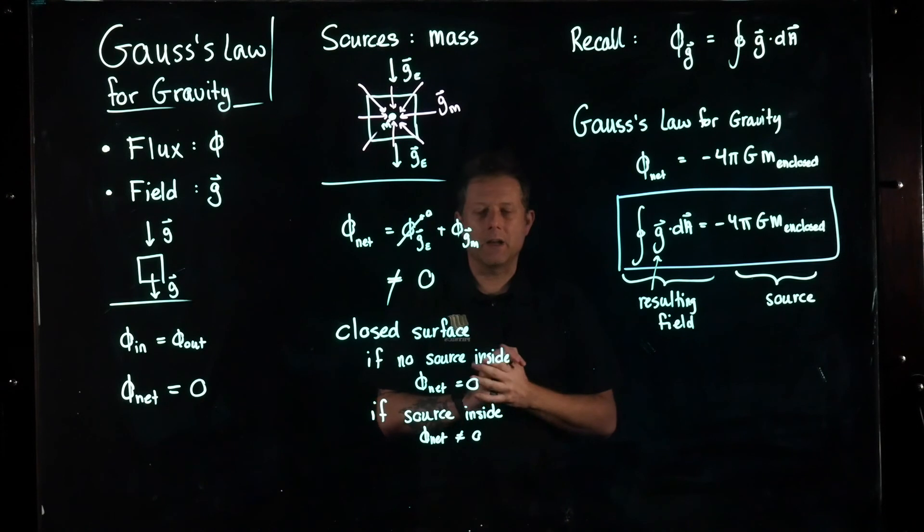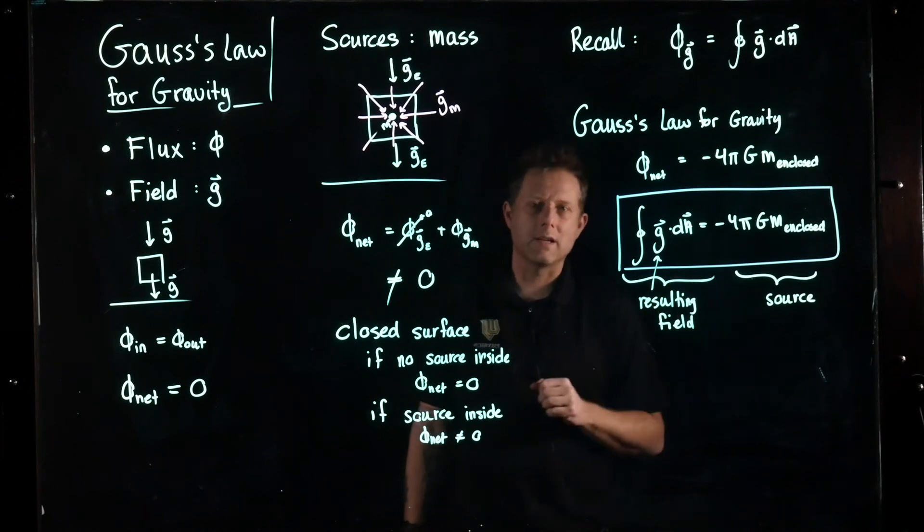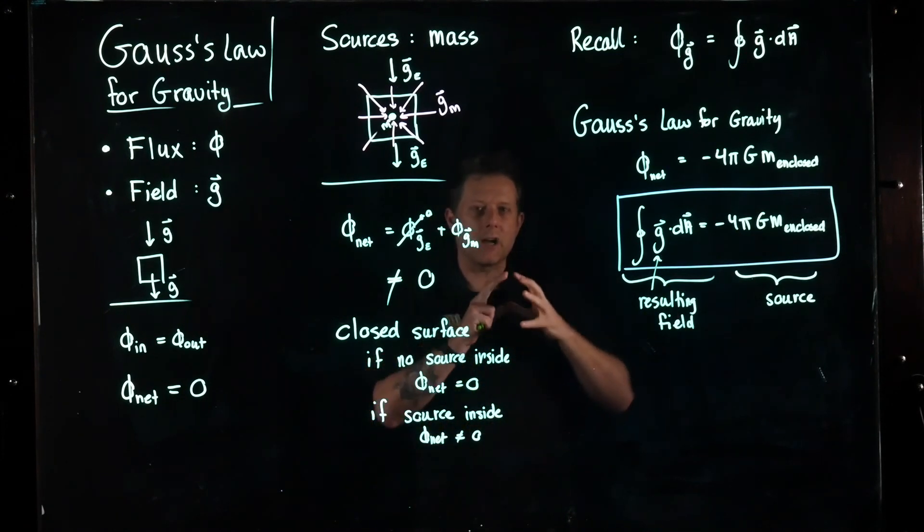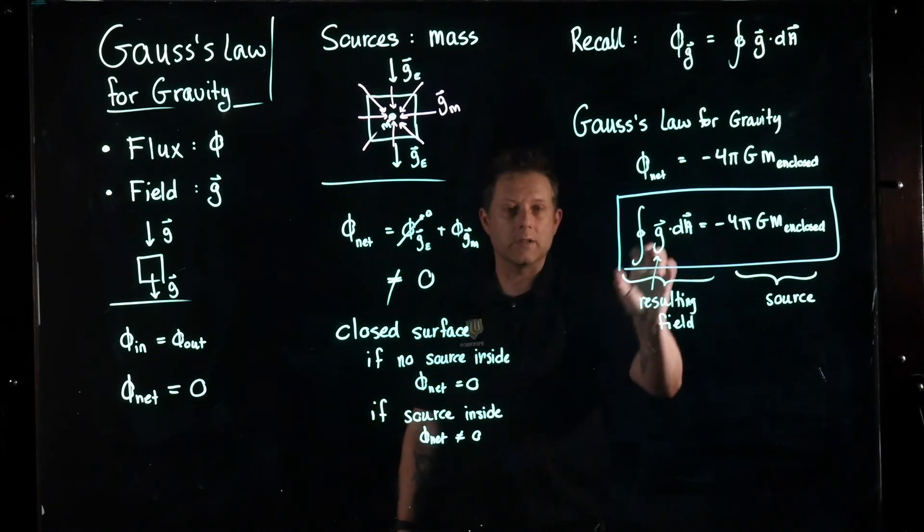We will see some examples of that in how we deal with the gravitational field. But where we're really going to use it is when we get into electric and magnetic fields. For electric fields, this mass becomes electrical charges instead. If we know something about the electric charges and how they're distributed, we can calculate the electric field using Gauss's Law.